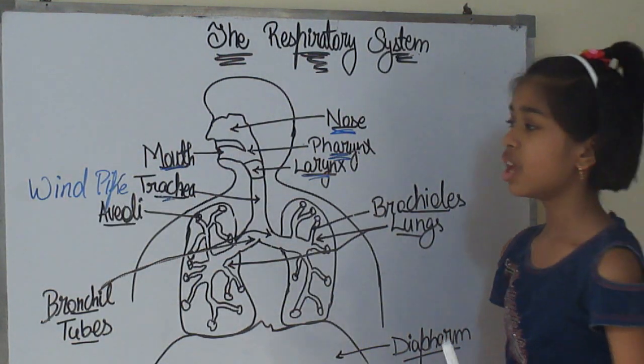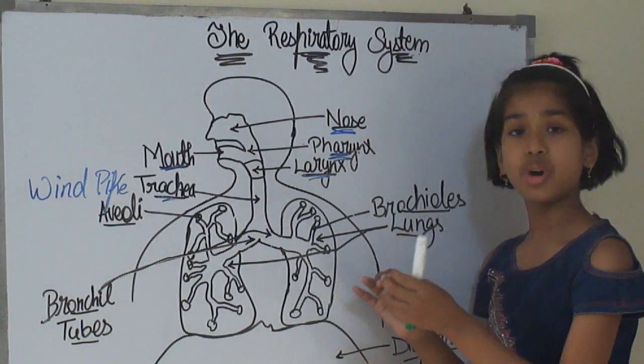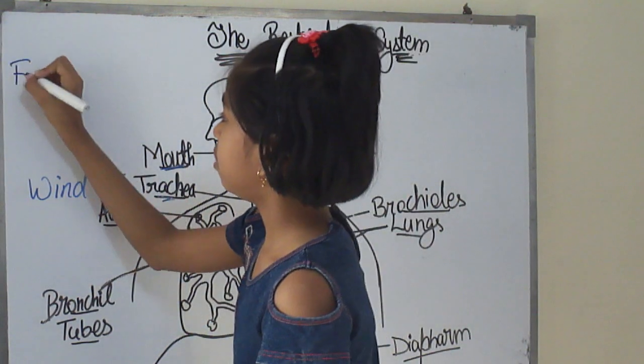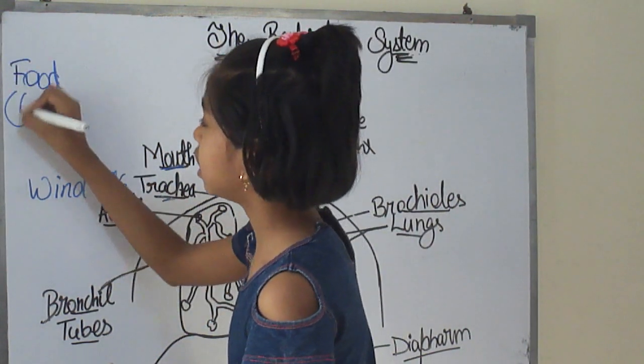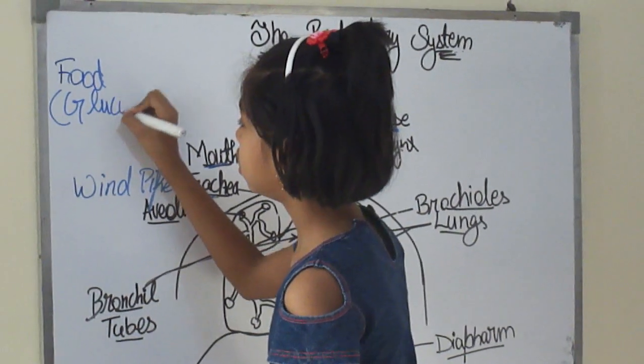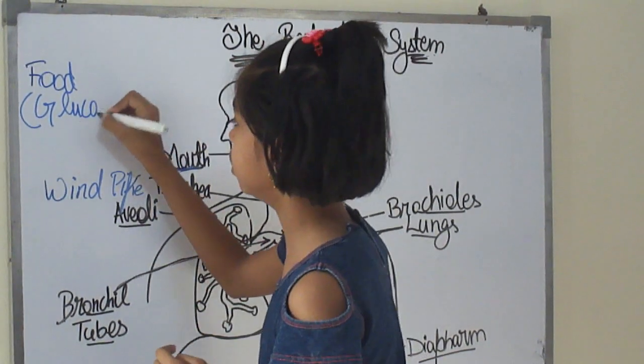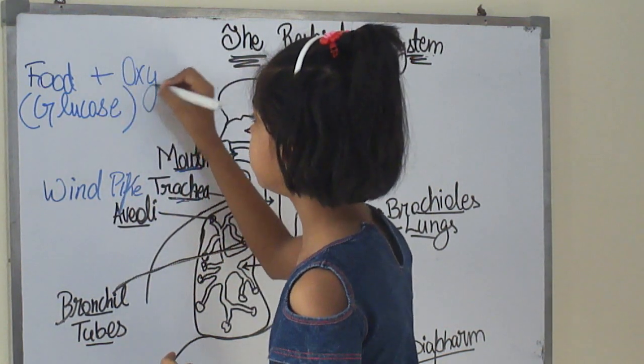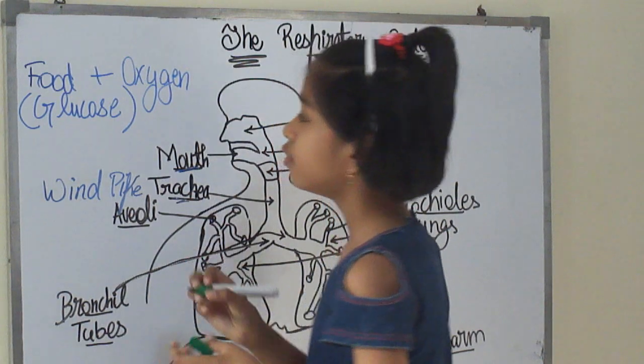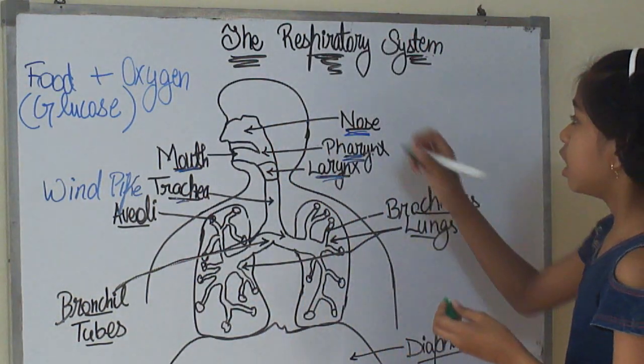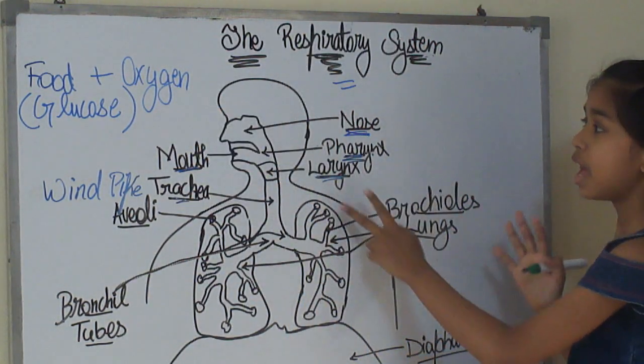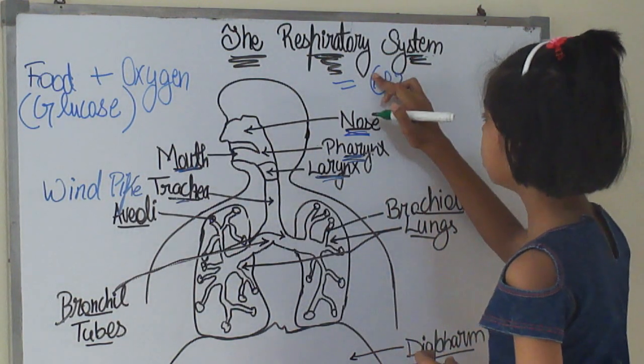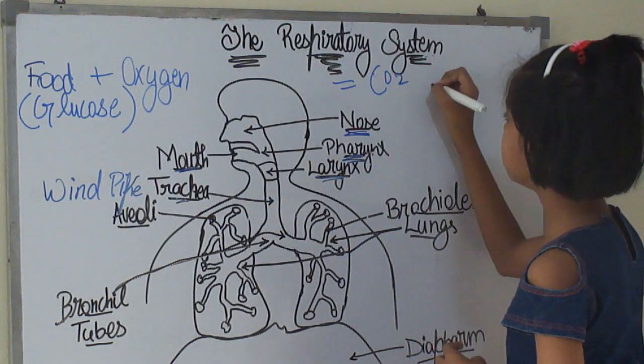Here is the answer. Our body's cells use food, it's basically glucose from the digestive system, plus oxygen. And what does it do? It puts these together and forms carbon dioxide or CO2 and water.